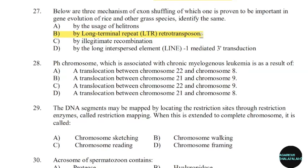28th question: The Philadelphia chromosome, which is associated with chronic myelogenous leukemia, is the result of. Correct answer: Option C — A translocation between chromosome 22 and chromosome 9.